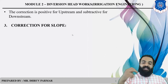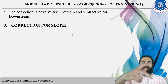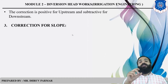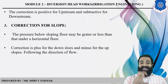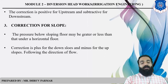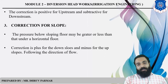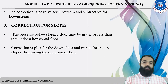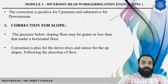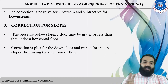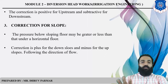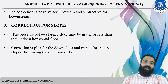The last correction is the correction for slope. This correction is negative for the upstream side and positive for the downstream side — the reverse of the mutual interference correction. The pressure below sloping flow may be greater or less than that under horizontal flow, which is why the correction for slope is provided.